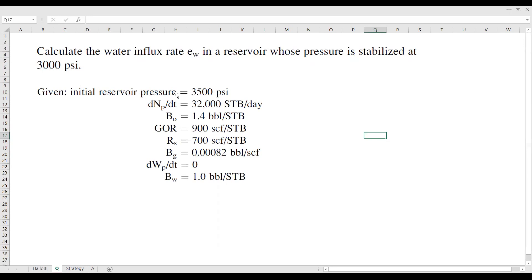We have initial reservoir pressure, we have the rate of change of oil cumulative production with respect to time, and then we have oil formation volume factor, GOR or gas oil ratio, and then we also have RS which is solution gas ratio, BG which is gas formation volume factor, and then we also have the rate of change of the cumulative water production with respect to time, and then finally we have water formation volume factor.